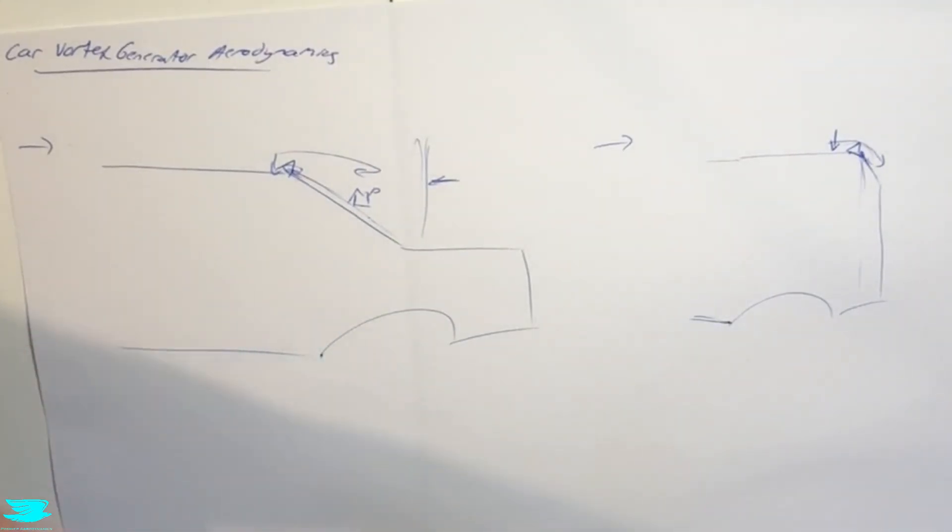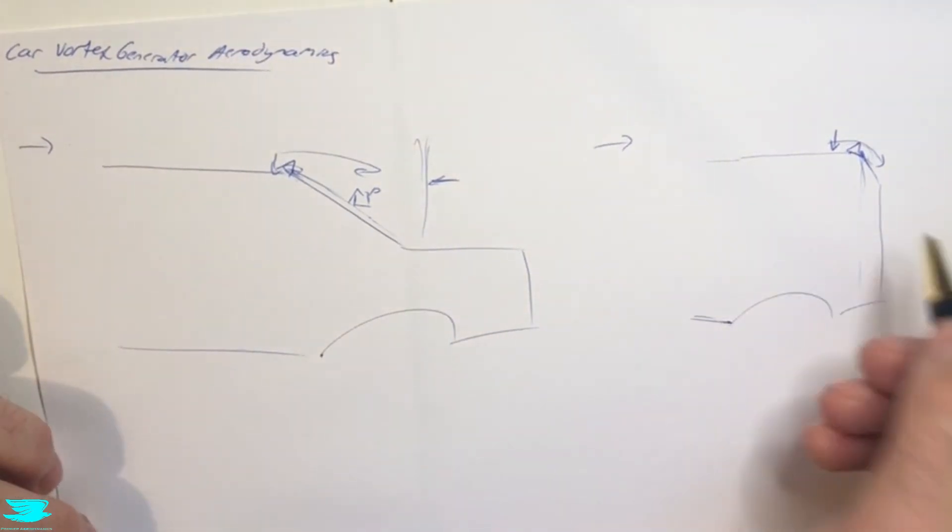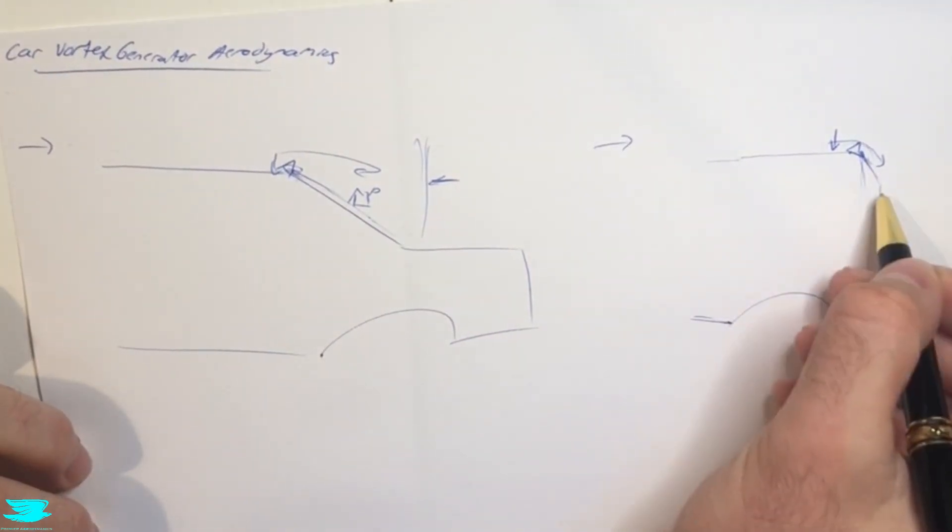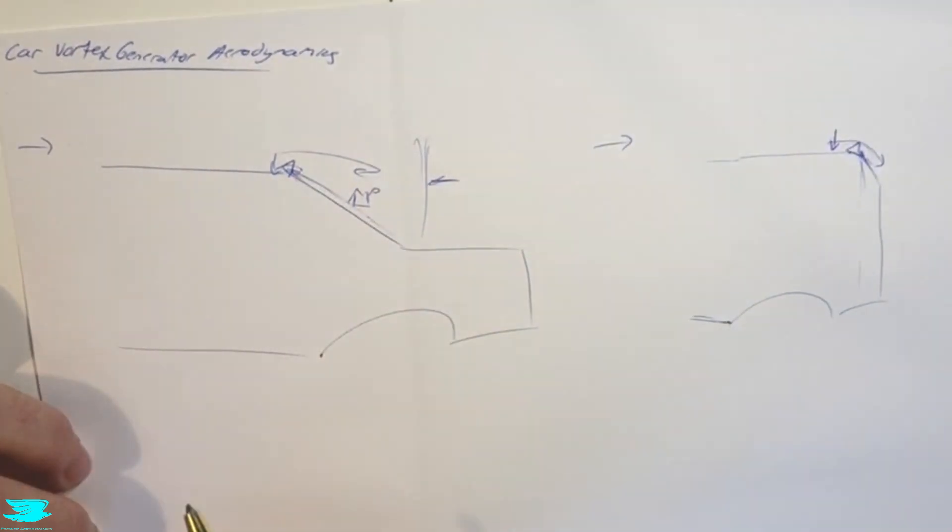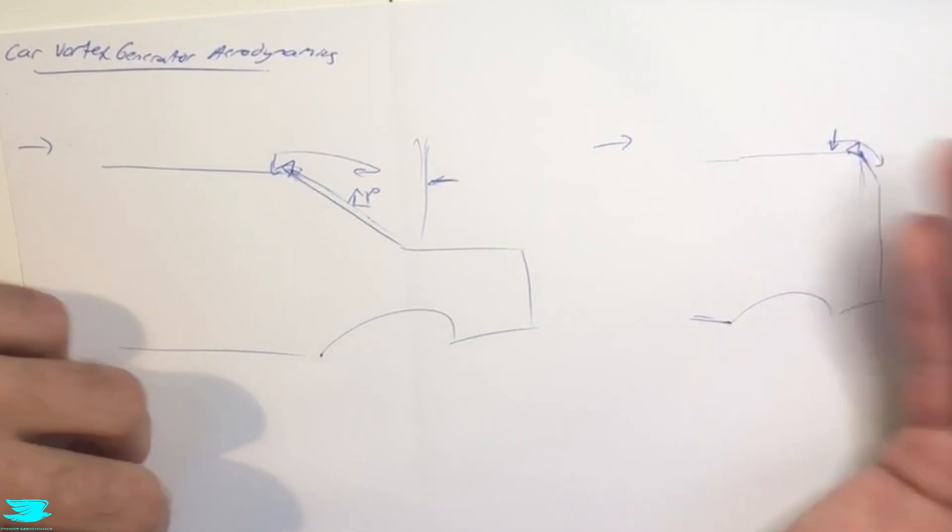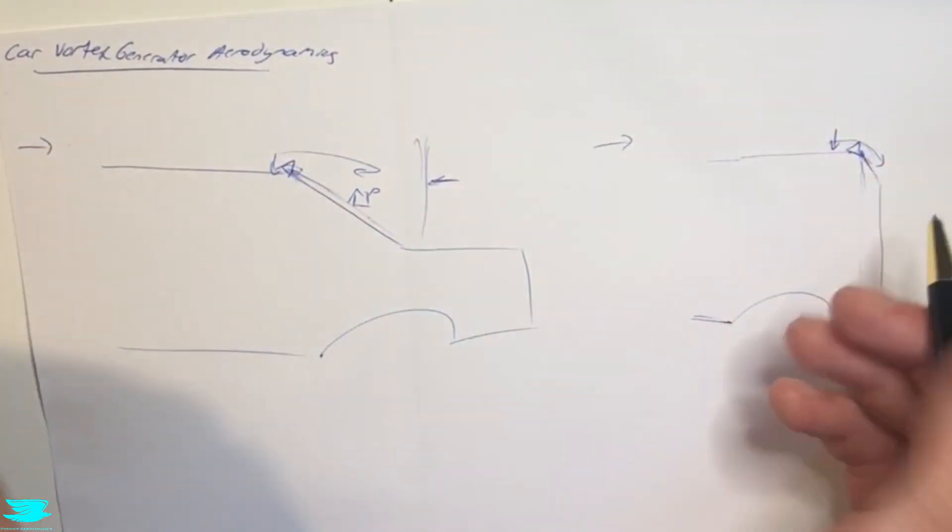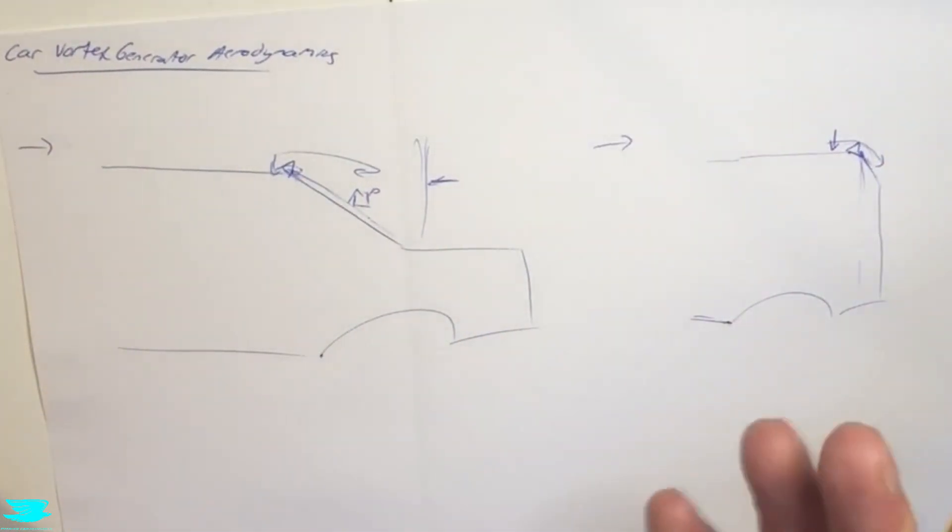The problem with that is that a lot of papers, for example, one paper called Comparative Effects of Vortex Generators on Ahmed's Square Back and Minivan Car Models found that you can reduce the drag on this rear face. Because this rear face is a lot more vertical than this rear window, the pressure is acting more in the drag direction. So how you manipulate the pressure on this rear face will affect the drag more than the lift.